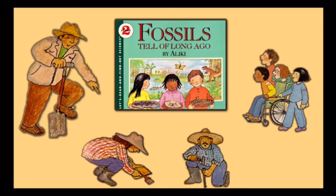Thousands of years went by. More layers of mud covered the fish. Tons and tons of mud piled up. After a long time the surface of the earth changed. The sea where the fish was buried dried out. The weight of the layers of mud pressed down. Slowly the mud turned to rock.